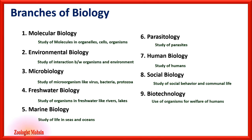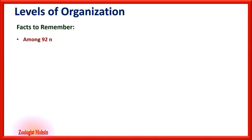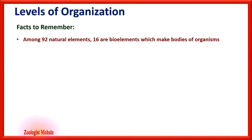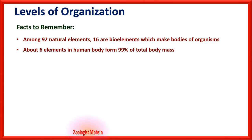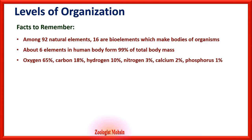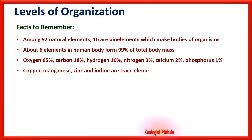Levels of organization — facts to remember: Among 92 natural elements, 16 are bio-elements which make up the bodies of organisms. About six elements in the human body form 99% of total body mass. Oxygen constitutes 65%, carbon 18%, hydrogen 10%, nitrogen 3%, calcium 2%, and phosphorus 1%. Copper, manganese, zinc, and iodine are trace elements.